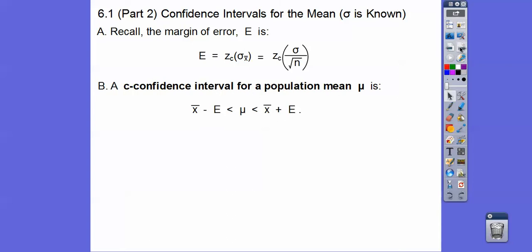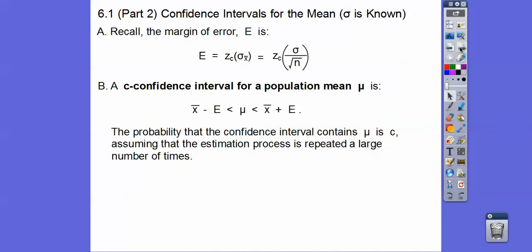We know that our population mean is somewhere between the sample mean minus this margin of error and the sample mean plus this margin of error. So what if it says 90% confidence interval? Then 90% of the time the population mean will be in there. The probability that the confidence interval contains the population mean is our c — usually 90%, 95%, or sometimes 99% — assuming the estimation process is repeated a large number of times.